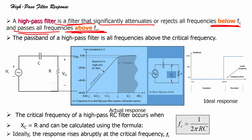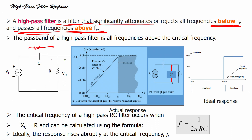The main thing that you will see which is different from the low pass filter is the placement of the R and C. In the low pass filter, the resistor was first and the capacitor followed. In the high pass filter, we have the capacitor followed by the resistor.